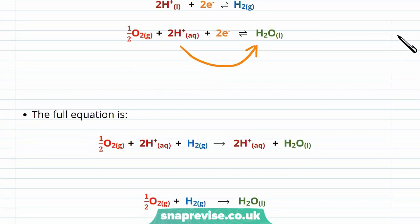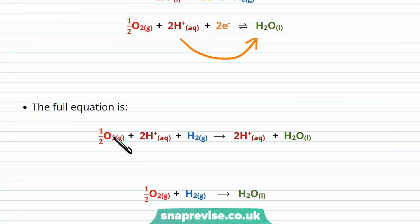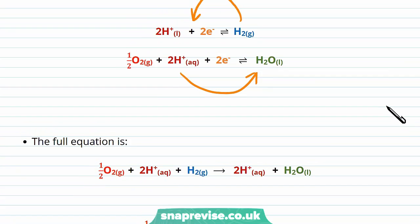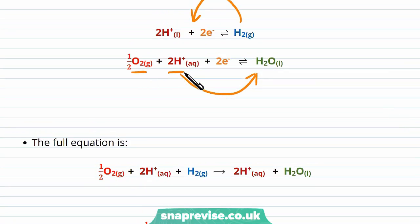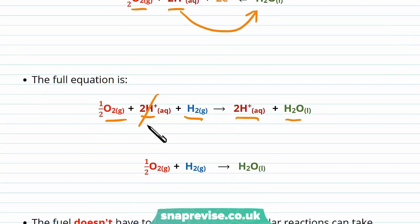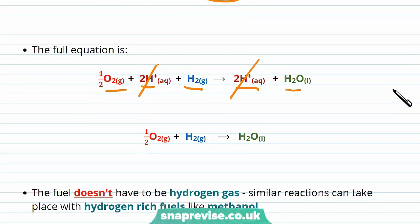The full equation is given by combining these, so we have the oxygen and the 2H+ from this reaction here, forming this part of it, and the hydrogen being the other reactant. The products are then the H+ ions and the water generated. We can then cancel the H+ ions, because they appear on both sides of the equation, and we're left with the final full equation, which is now the same as before. Oxygen combining with hydrogen to form water.